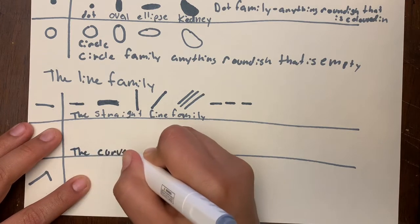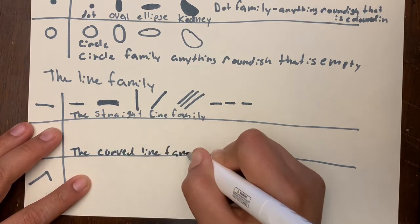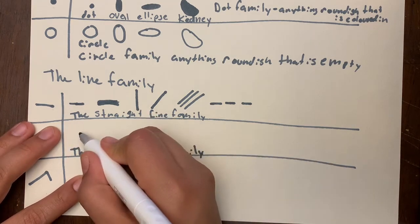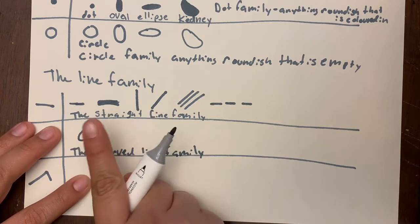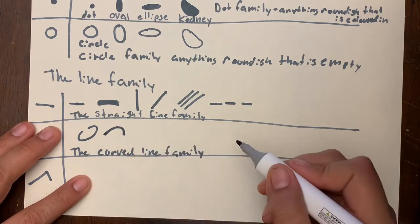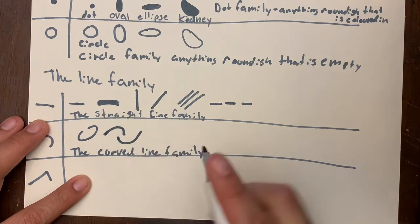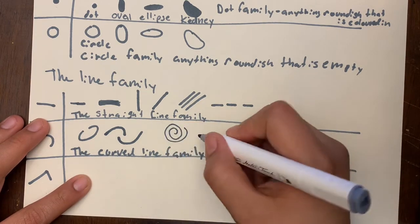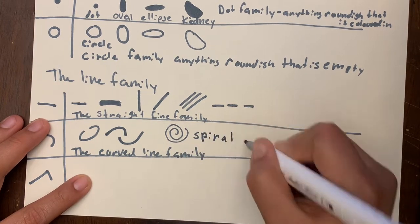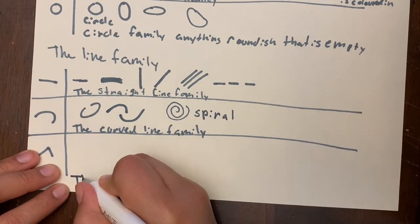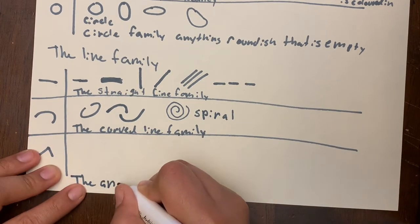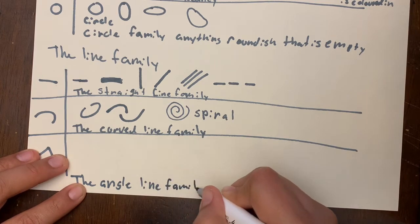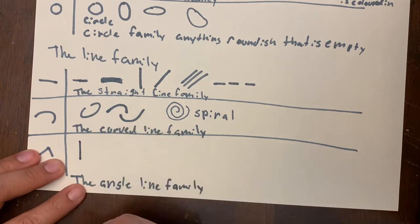Next up is the curved line family. Even if it's not touching, it is still a curved line. We can have two curved lines interacting with each other, and a spiral. Those are all curved lines — anything with a nice curve.